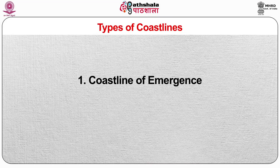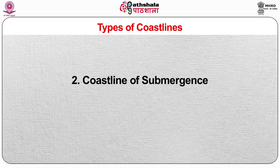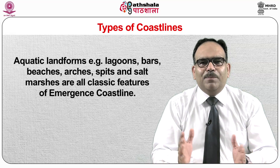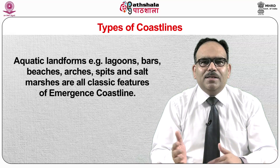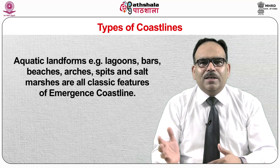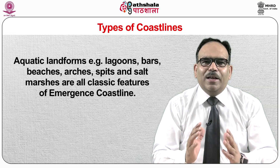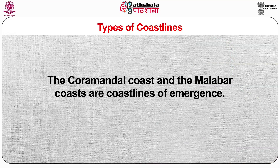Let's discuss the types of coastlines. A coastline of emergence is either the result of uplifting of the land or the lowering of the sea level. Aquatic landforms such as lagoons, bars, beaches, arches, spits and salt marshes are all classic features of an emergent coastline. The Coromandal coast and the Malabar coast are coastlines of emergence.